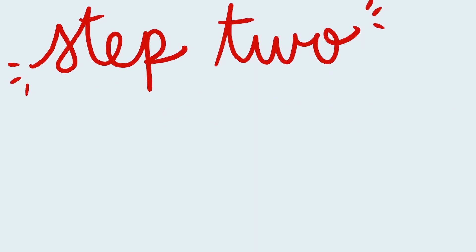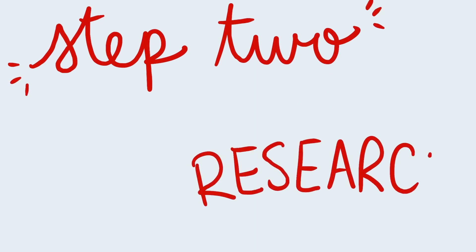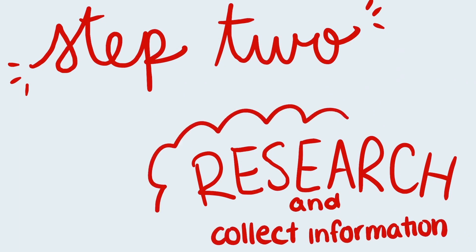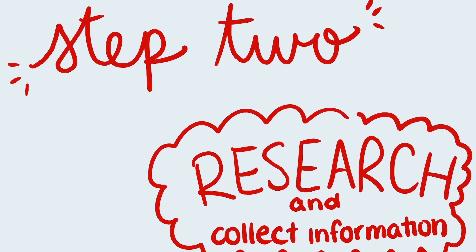After we ask a question, we have to collect research on the topic. What this means is we find the information that's already available to us from previously conducted research, or just things that we know because we've observed situations. Going back to our example of why doesn't the ocean freeze, we would look up different resources online, ask questions to our friends and family, and see what we can come up with about why we think the ocean doesn't freeze.